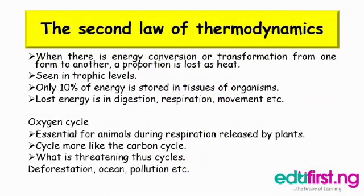The next topic is the second law of thermodynamics. When there is energy conversion or transformation from one form to another, a proportion is lost as heat. At each trophic level, only 10% is retained in the tissue of an organism. Energy is lost through digestion, respiration, movement, etc.